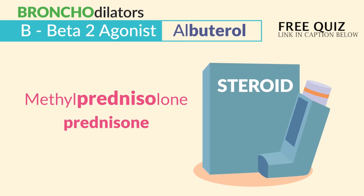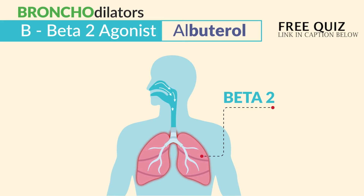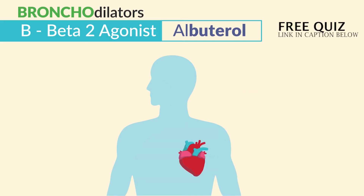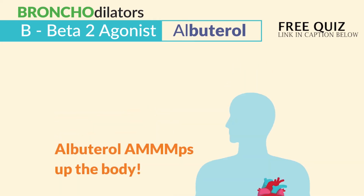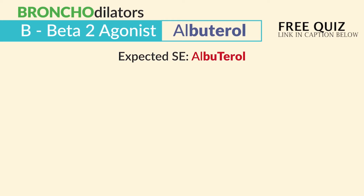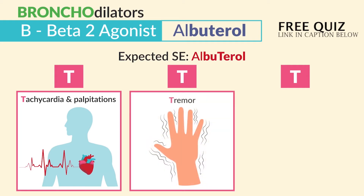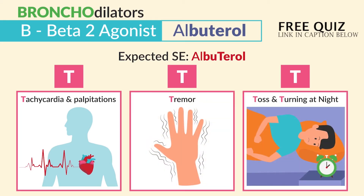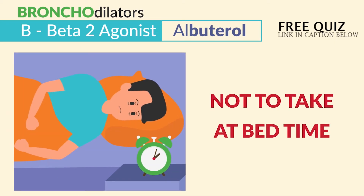For the mechanism of action, these are beta-2 agonists which activate beta-2 receptors in the lungs, dilating the bronchi and resulting in increased airflow. But albuterol also activates beta-1 in the heart, which makes the heart go crazy fast, so a common side effect is rapid heart rate. The expected side effects for albuterol — just think of the three T's: T for tachycardia and palpitations, T for tremor, and T for tossing and turning at night. The keyword for exams is insomnia and difficulty sleeping, so teach patients not to take it at bedtime.